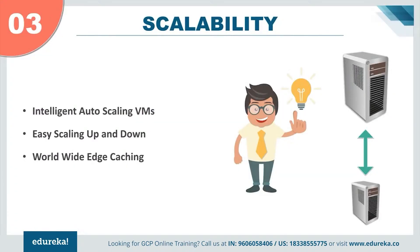Coming down to the top three reasons — at number three, we have scalability. You can easily scale up or down your machines depending upon your requirements, and everything is made simpler by Google. The Google VMs are auto-scalable, with an auto-scaler that scales instances up or down according to traffic received, saving money and making tasks simpler. This is a great feature as it decreases the overhead and engagement effort required for the job.